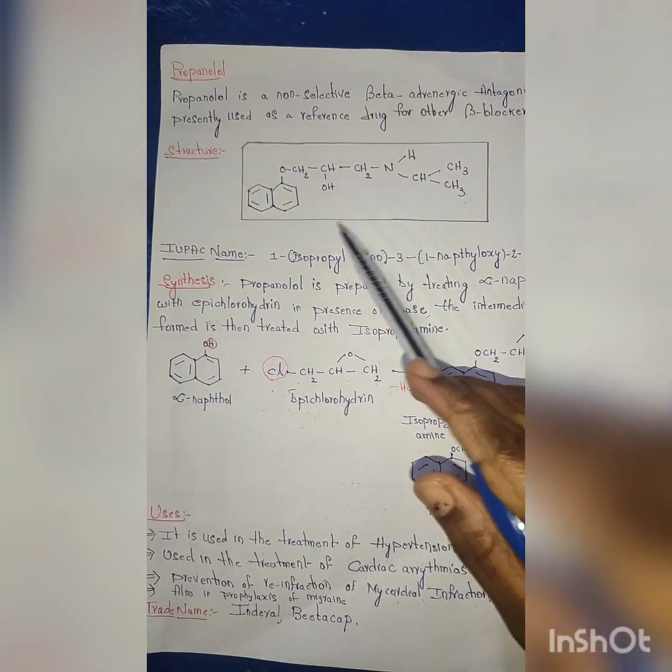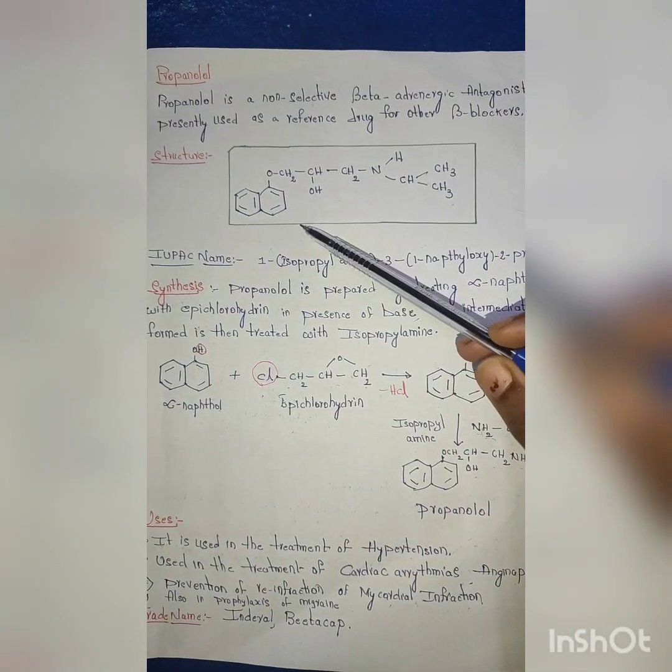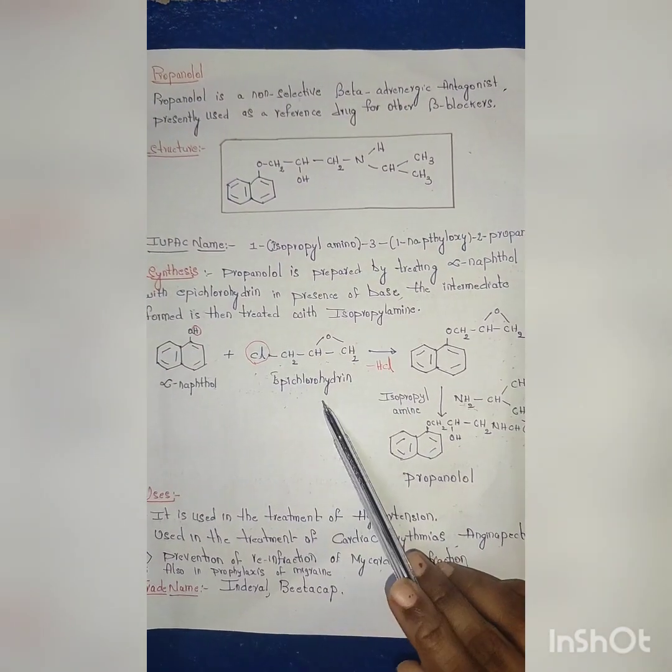Now this is the structure where you can see naphthalene here, this is naphthalene ring. This is isopropyl group. Now coming to the synthesis, as I have told, it is prepared by treating alpha-naphthal with epichlorohydrin in the presence of a base.